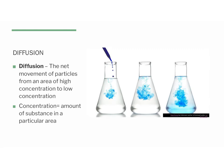This idea of perfume particles spreading out represents something called diffusion. Diffusion is the net movement of particles from an area of high concentration to low concentration. Let's break that down: concentration is the amount of substance in a particular area — high concentration means a lot of substance, low concentration means just a little. Net movement refers to the overall movement of particles from high to low concentration.